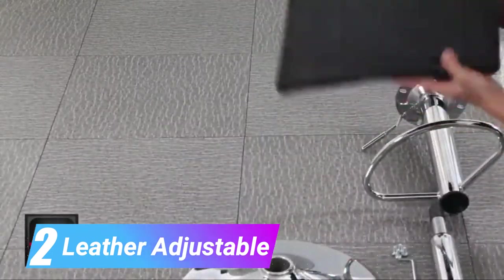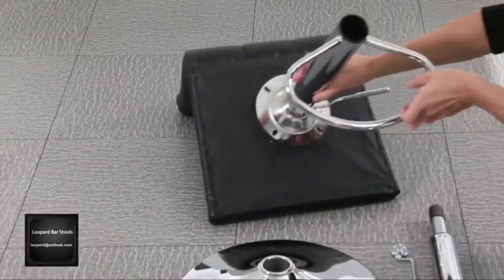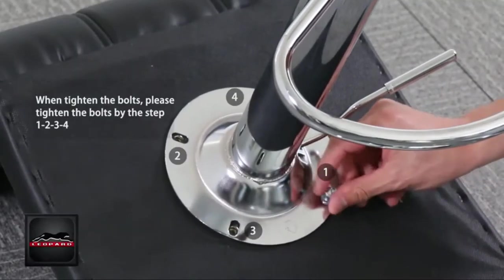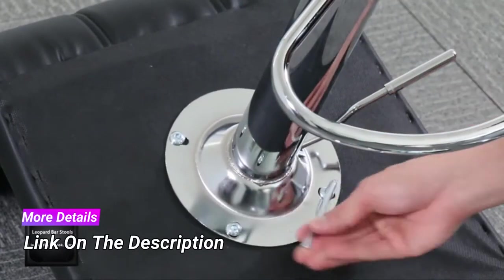Number two: Leather adjustable bar stools. With the help of 360 degree swivel, it is a bar stool that is highly comfortable for the patrons. Also, the bar stool is available in 11 color options. It comes in a set of two.